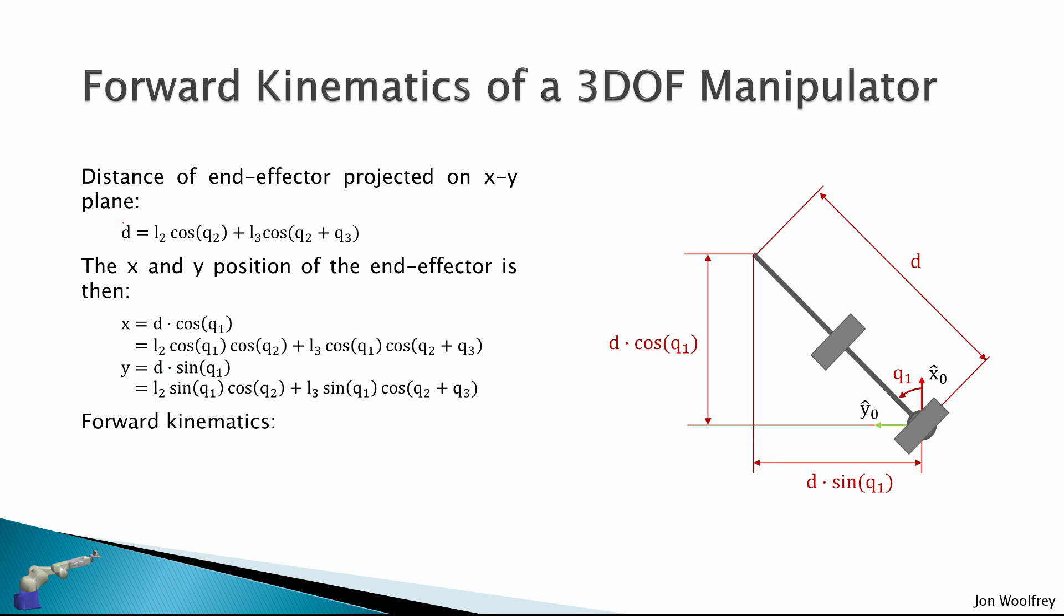And therefore, the forward kinematics as a vector function of Q is X equals L2 cos Q1 cos Q2 plus L3 cos Q1 cos(Q2 plus Q3). Y is L2 sin Q1 cos Q2 plus L3 sin Q1 cos(Q2 plus Q3). And Z is L1 plus L2 sin Q2 plus L3 sin(Q2 plus Q3). So this is getting much more complicated.